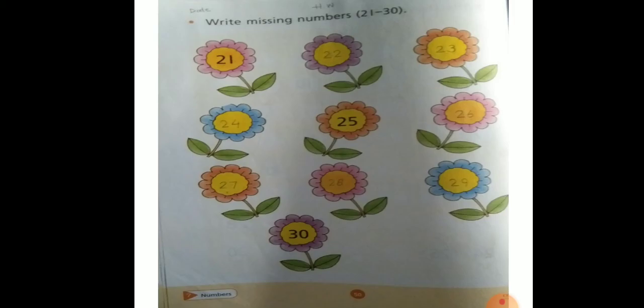The next page, number 50. Page number 50, missing numbers are 21 to 30. Counting we will write here. The next page number, 21, 22, 23, 24, 25, 26, 27, 28, 29, or 30.